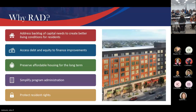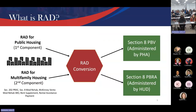The RAD program has two different buckets. The largest is RAD for public housing — we've converted about 190,000 units. Properties can convert to two streams of Section 8: project-based vouchers (PBV), administered by a local housing authority, or project-based rental assistance (PBRA), administered by HUD. Then there's RAD for multifamily, which includes Section 202 PRACs for housing for the elderly, Section 8 moderate rehab, and McKinney-Vento mod rehab SROs for persons who've experienced homelessness.